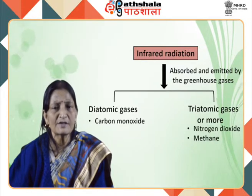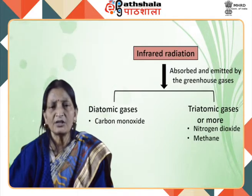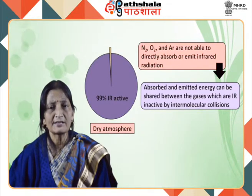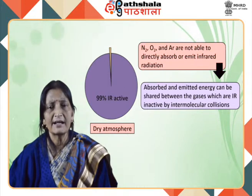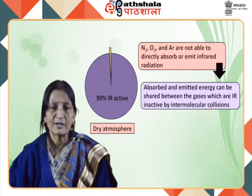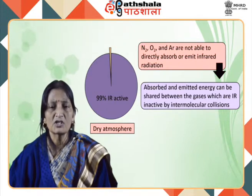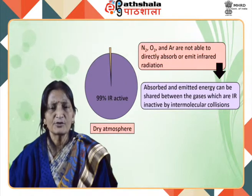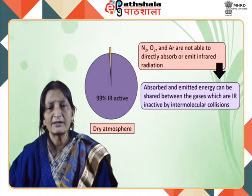Infrared radiation can be absorbed and emitted by greenhouse gases including diatomic gases having two different atoms such as CO, and all gases having three or more atoms, for example nitrogen dioxide, methane, etc. It is estimated that approximately 99% of the dry atmosphere is IR inactive. This is because the main gases present, nitrogen, oxygen and argon, are not able to directly absorb or emit infrared radiation. The energy absorbed and emitted by the greenhouse gases can be shared between the IR-inactive gases by intermolecular collisions.